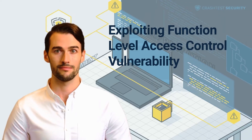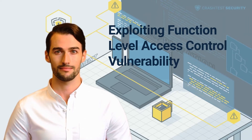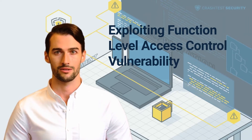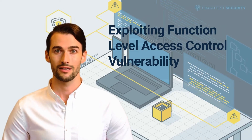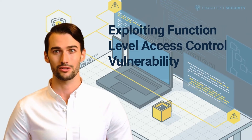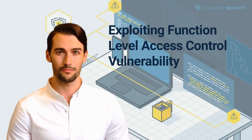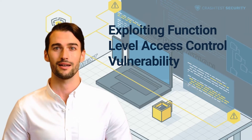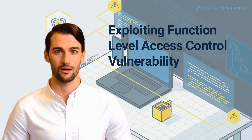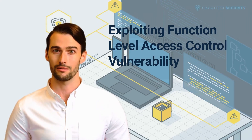Horizontal privilege escalation: The attacker logs into a website. The URL bar probably includes the user's ID during the login process. After proper authentication, they try to change the user's ID to that of another user's account. Without proper authorization, the hacker can now log in as other application users by editing the URL's UID parameter.